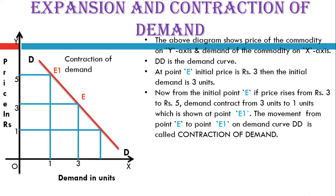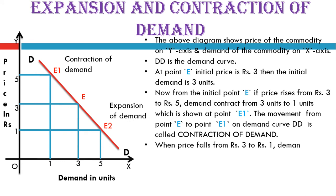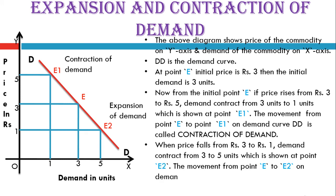Exactly opposite: the price reduces from 3 to 1 and demand increases from 3 to 5, giving a new equilibrium point E2. When price falls from rupees 3 to 1, demand expands from 3 to 5 units, shown at point E2. The movement from point E to E2 on the demand curve is called expansion of demand.